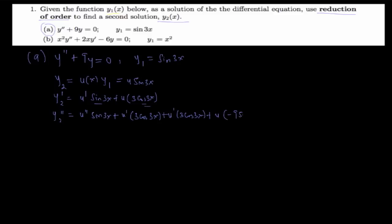Then for y2'', we differentiate again carefully and obtain: y2'' = u''·sin(3x) + 6u'·cos(3x) − 9u·sin(3x). So this is what we have for y2''. We are now going to substitute y2'' and y2 into the differential equation.